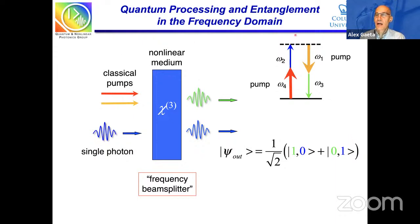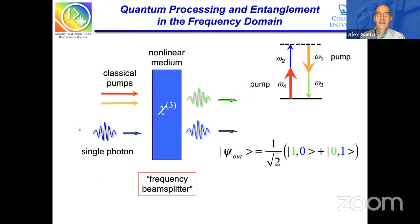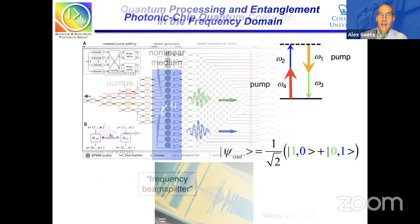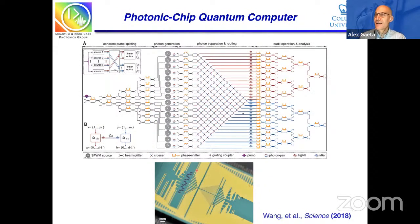This process is also a form of quantum frequency conversion. Whereas many researchers are interested in maximizing conversion from, say, blue to green at 100%, there's a very interesting regime precisely at 50% conversion efficiency, where you get this beam splitter operation. I want to show an example of where nonlinear photonics and entanglement in the spatial domain is currently being used.